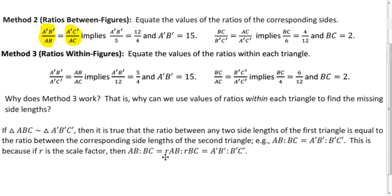We know that when we multiply R times AB, that's going to be the length of A'B'. And the same logic gives us B'C'. So, this is why the within-figures ratio method works.